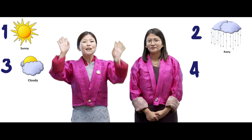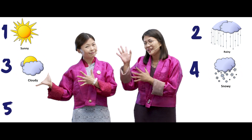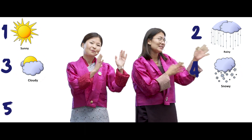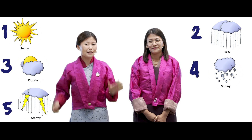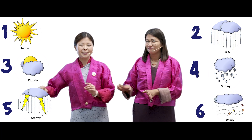Today we have learned six types of weather. Number one: sunny day. Number two: rainy day. Number three: cloudy day. Number four: snowy day. Number five: thunder and lightning. And the final one: windy day.